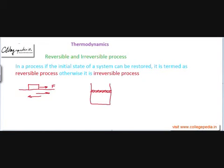In a process, if the initial state of a system can be restored, it is termed a reversible process; if it cannot be restored, that is an irreversible process. We must differentiate a reversible process from a cyclic process. In a cyclic process the initial state is actually restored. In a reversible process, the initial state can be restored — it need not necessarily be restored, but there is scope for restoring it. Technically, all cyclic processes are reversible, but not all reversible processes are cyclic.